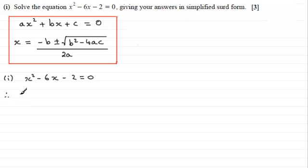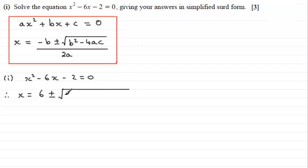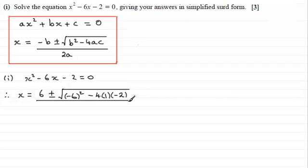b is minus 6 and c is minus 2. So therefore we end up with x equaling minus b, so that's minus minus 6, which is plus 6, plus or minus the square root of b squared minus 4ac. Make sure you put b in brackets because it's a negative term — minus 6 all squared — then minus 4 times a times c, which is minus 2, all divided by 2 times a, which is 2 times 1.